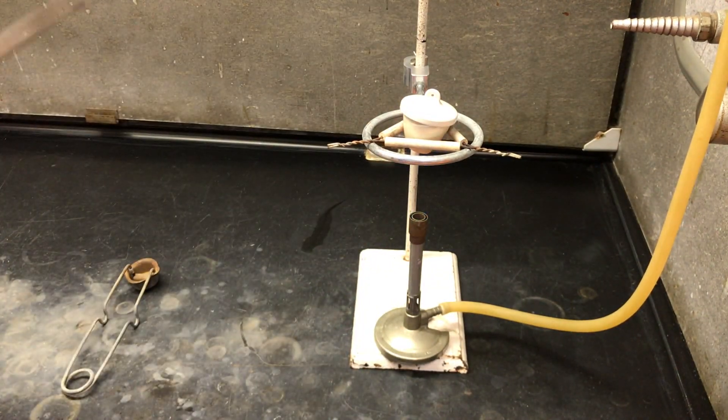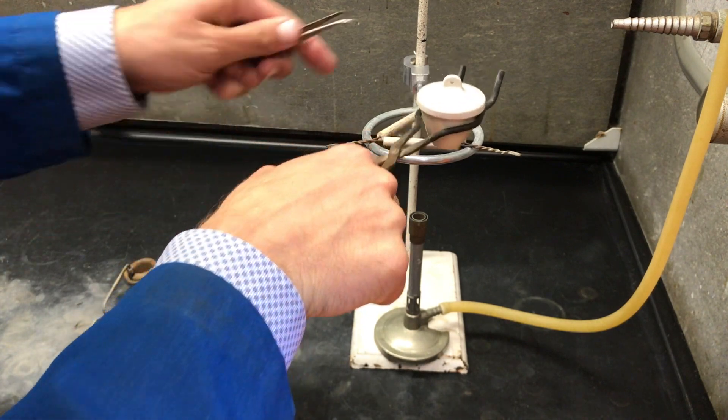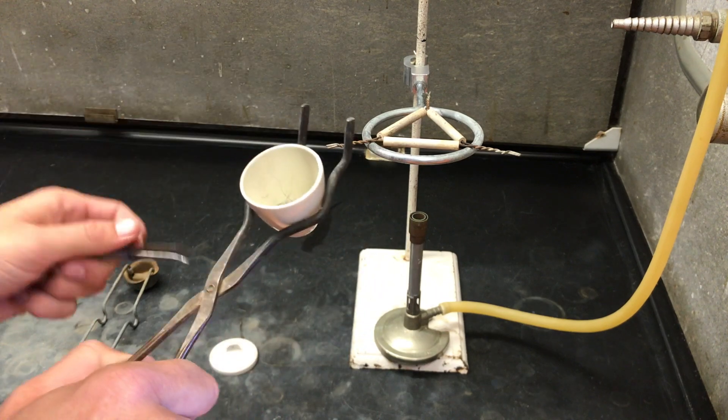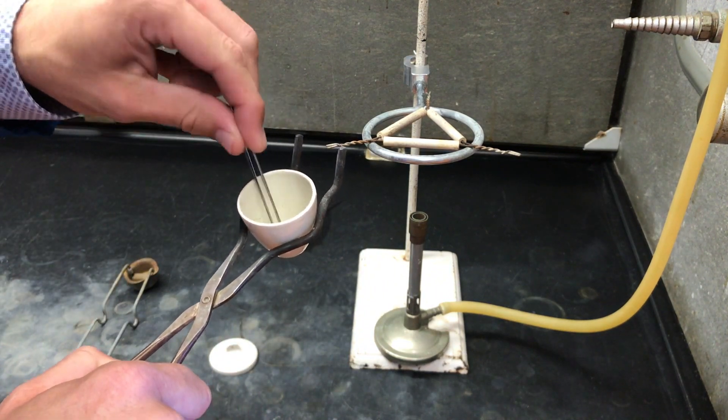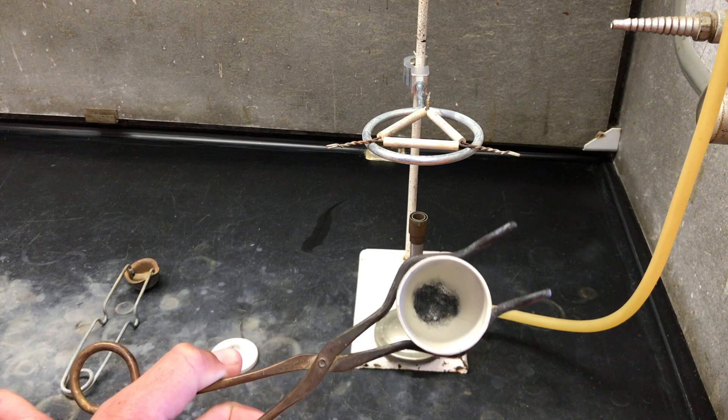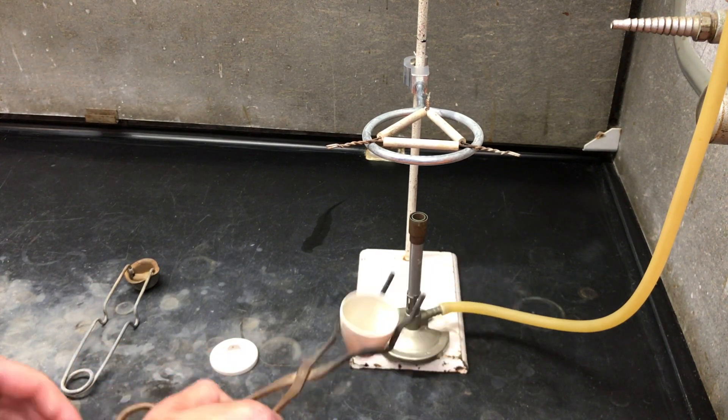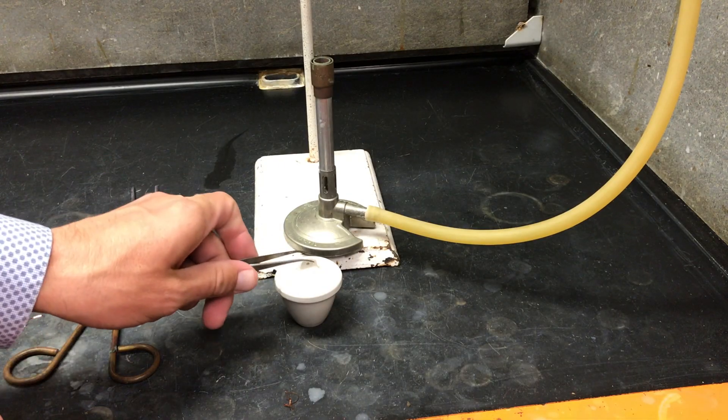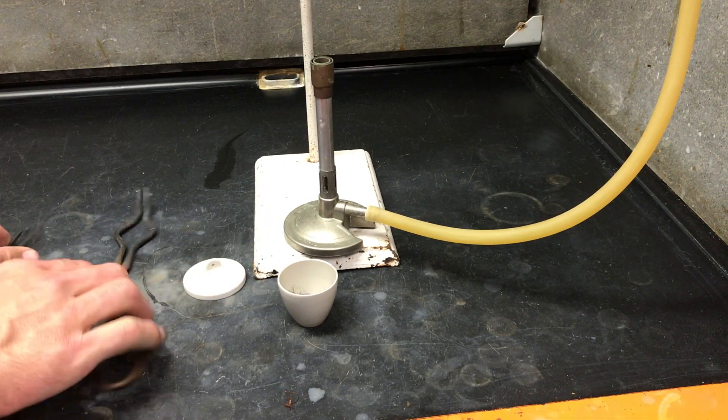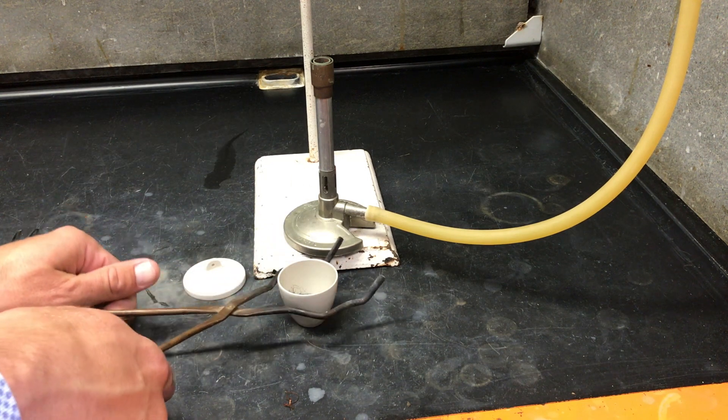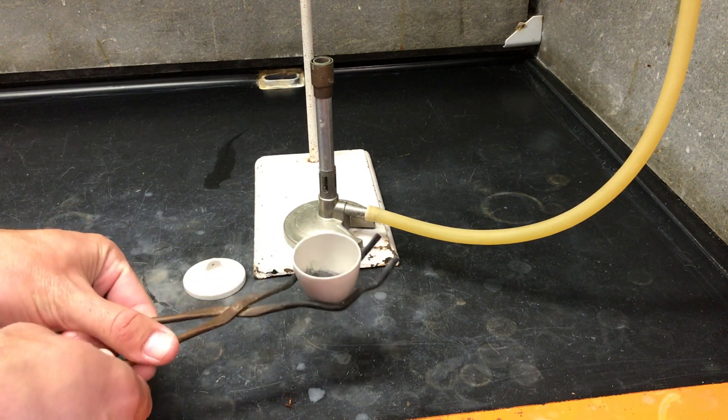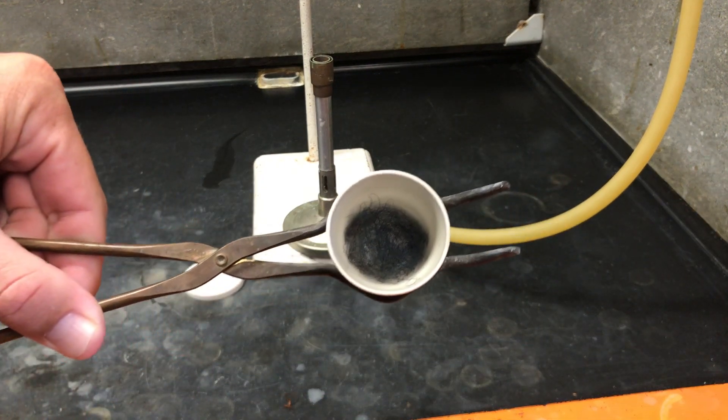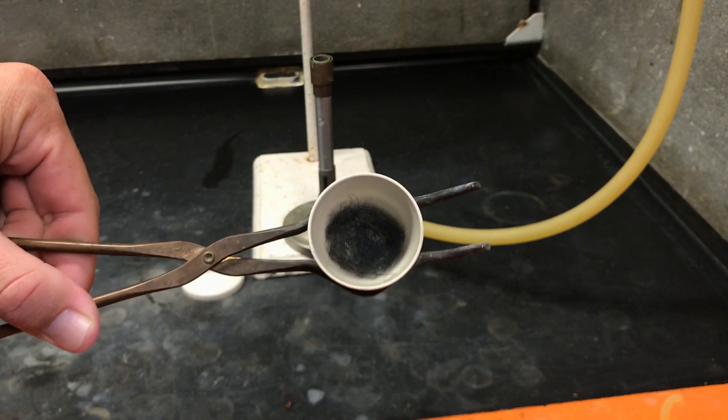Turn off the Bunsen burner, mix your materials and allow them to cool to room temperature before making your observations. Dispose of the waste in the labeled container and wash your crucible.